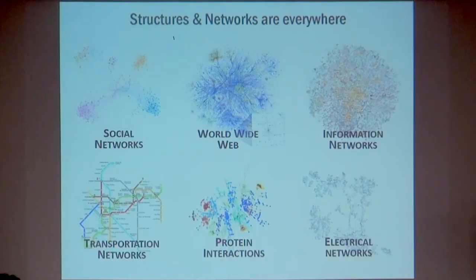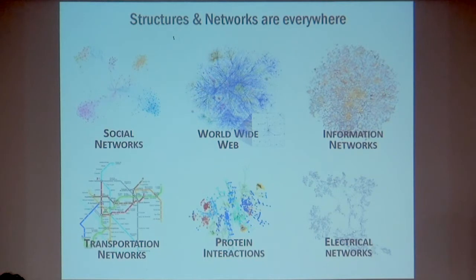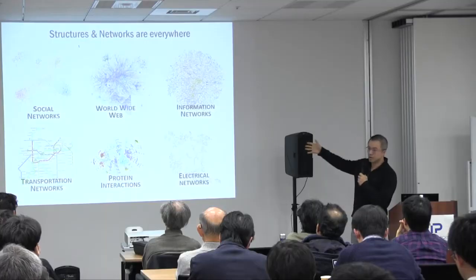For instance, network data — from social networks where each node is a person and people are connected to each other, with additional features at each node, and many prediction tasks about individual persons or pairs for recommendation. Such problems occur in many forms including information sharing networks, transportation networks, and protein networks. Convolutional and recurrent neural nets cannot be directly applied here because each node in the network has a different number of neighbors, whereas CNN and RNN inputs are more regular.